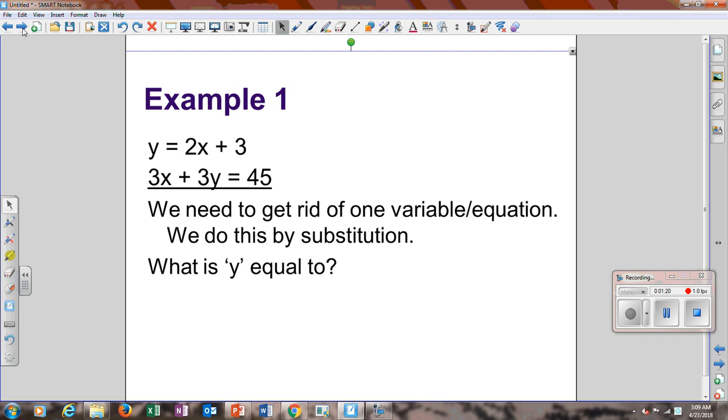We need to get rid of one variable in an equation. We do this by substitution. So since we already know that y is equal to this equation, that's the one we're going to get rid of. So we take this equation and we plug it in for y. That's going to give us 3x plus 3 times 2x plus 3 equals 45.